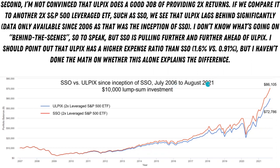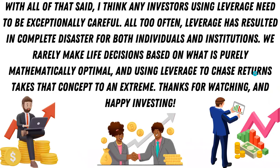A lump sum investment from 2006 to August 2021 of $10,000 in YulPix would have resulted in about $72,000, versus SSO which would put you up at about $86,000. With all of that said, I think that investors using leverage need to be exceptionally careful. All too often leverage has resulted in complete disaster for both individuals and institutions — that's why they call that thing the widow maker. A lot of times it can result in complete disaster if you don't know what you're doing or have some type of risk management. We rarely make life decisions based on what is purely mathematically optimal, and using leverage to chase returns takes that concept to an extreme.